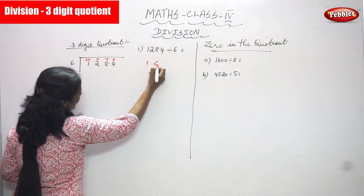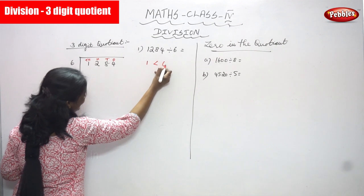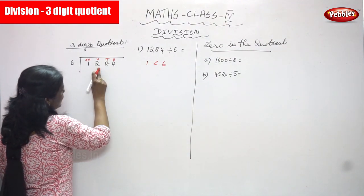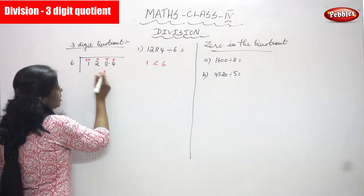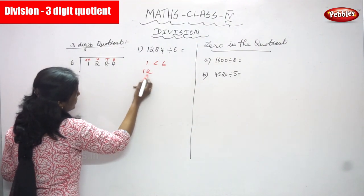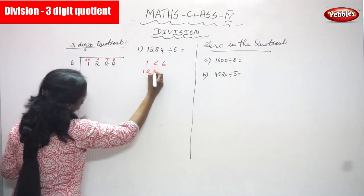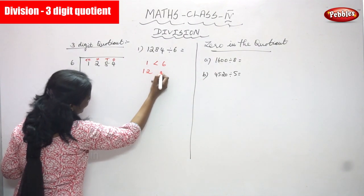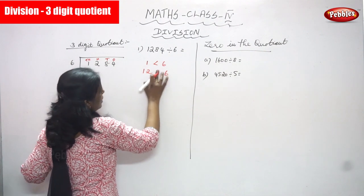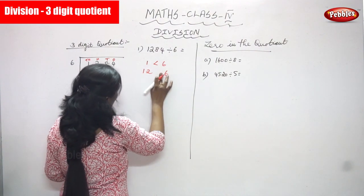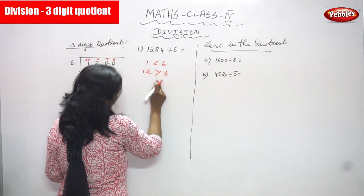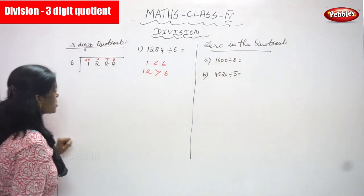Compare 1 and 6: 1 is less than 6, so you can't divide. Take the next digit — the hundreds place number is 2. Combine 1 and 2 to get 12. 12 is greater than 6.